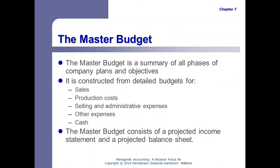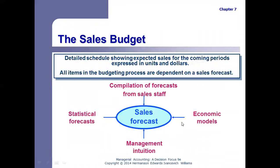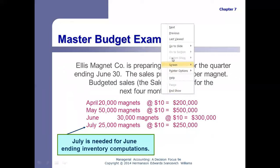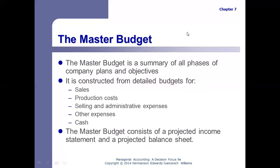Now we get into the details of budgets. The master budget is kind of like a summary. All of the other budgets are constructed for specific things — sales, purchases, that type of thing. The master budget consolidates all of the other detailed budgets into a single master budget, which is your projected income statement and your projected balance sheet. This master budget is obviously done after all of the other detailed budgets are completed; it's the summary of all of those.